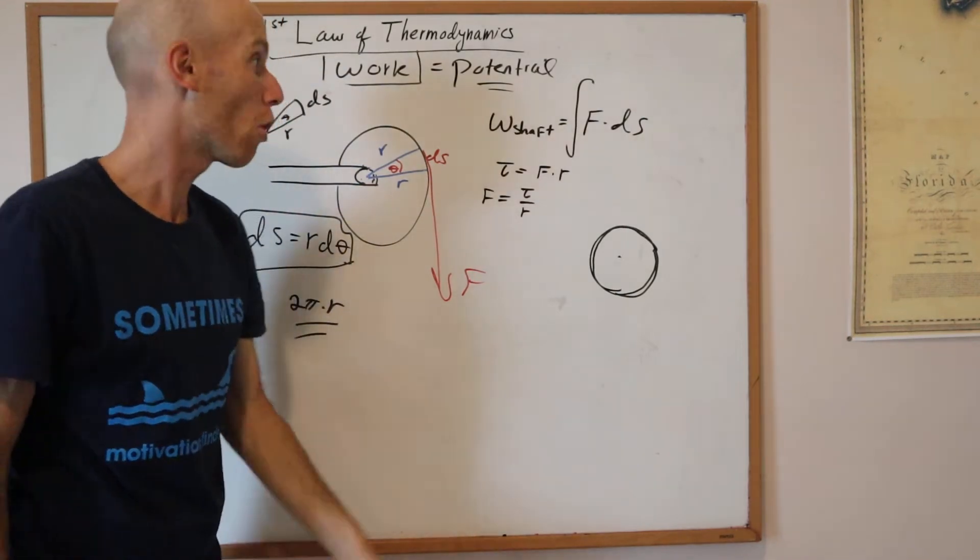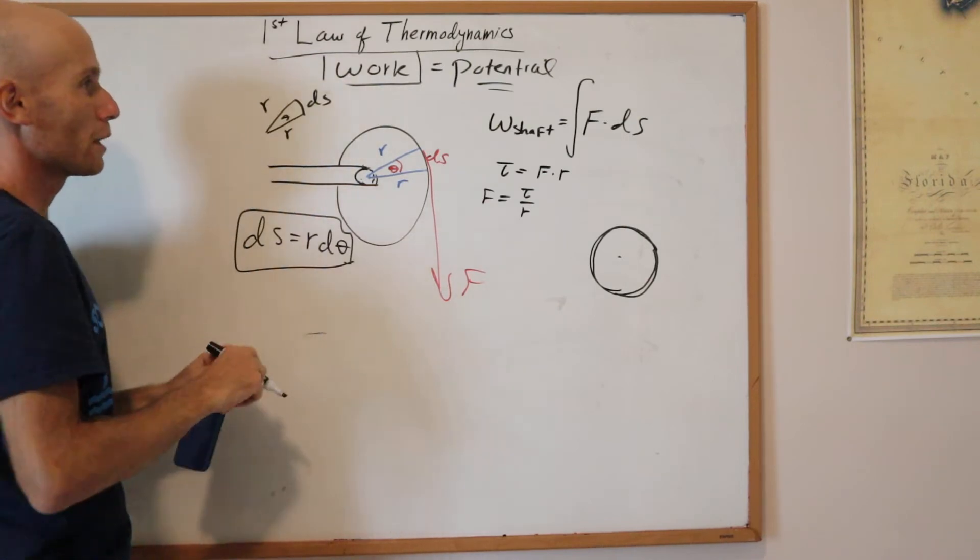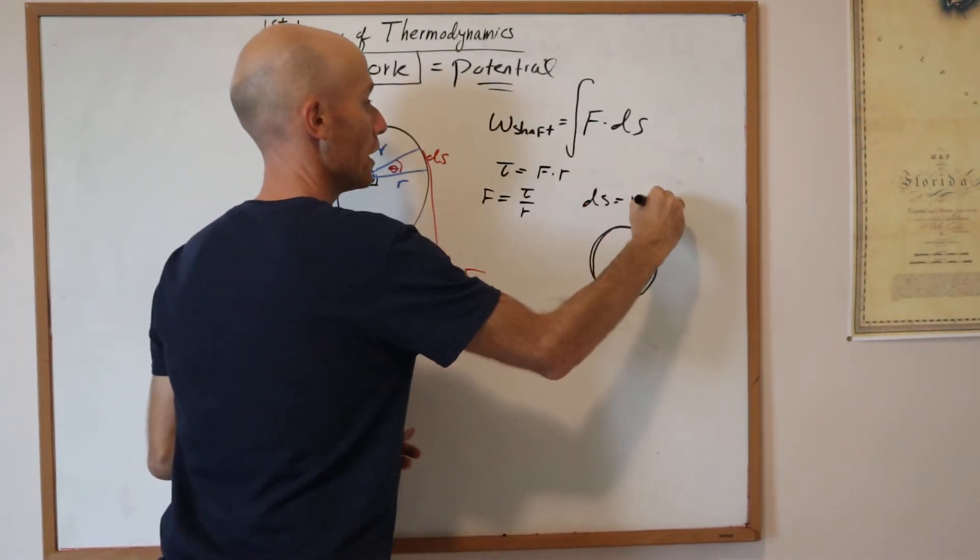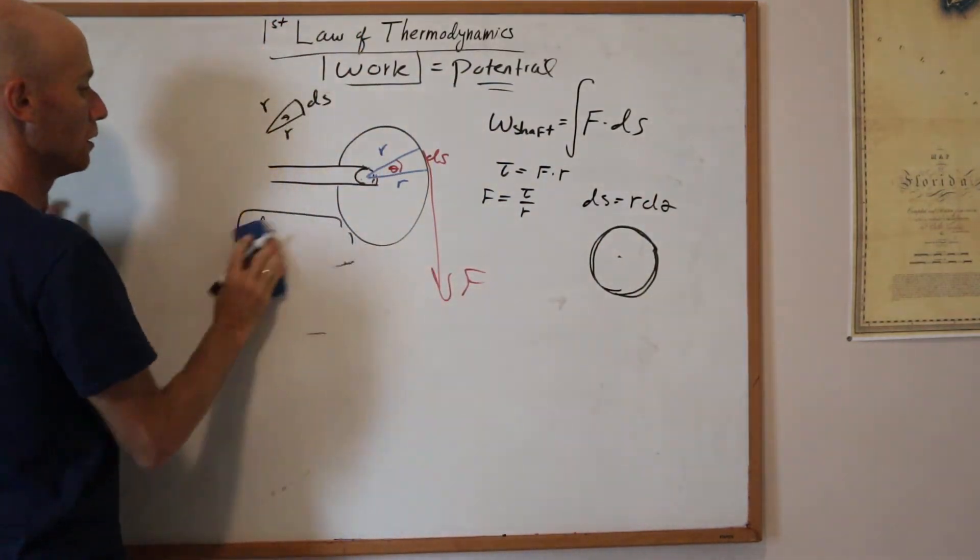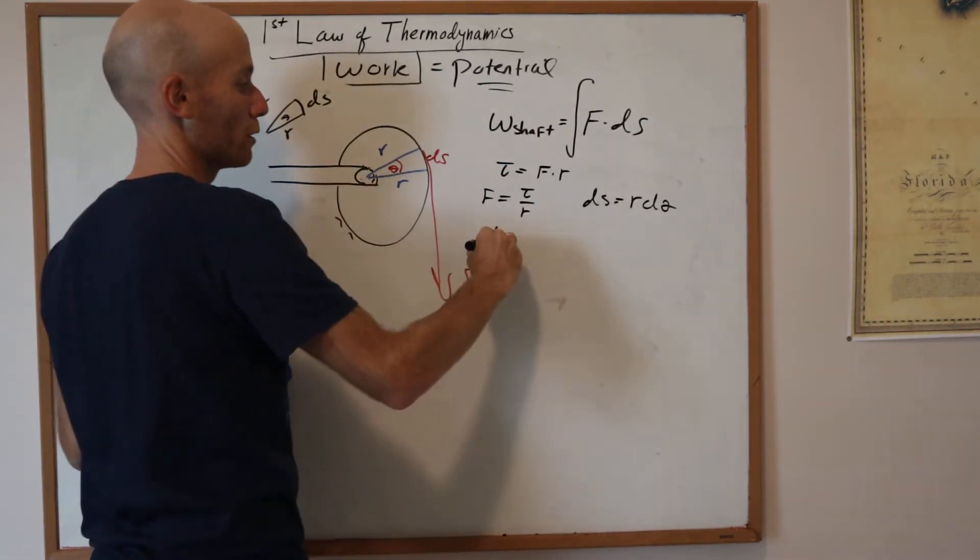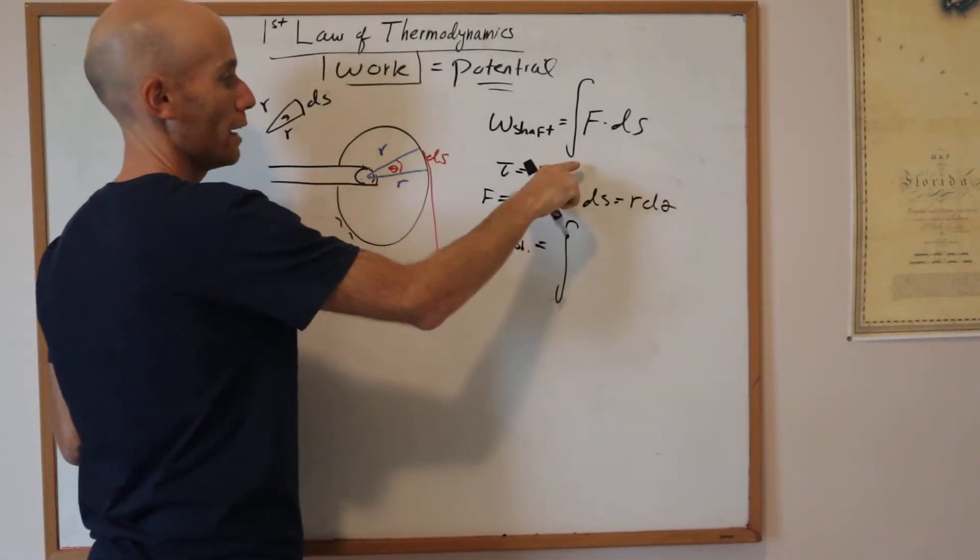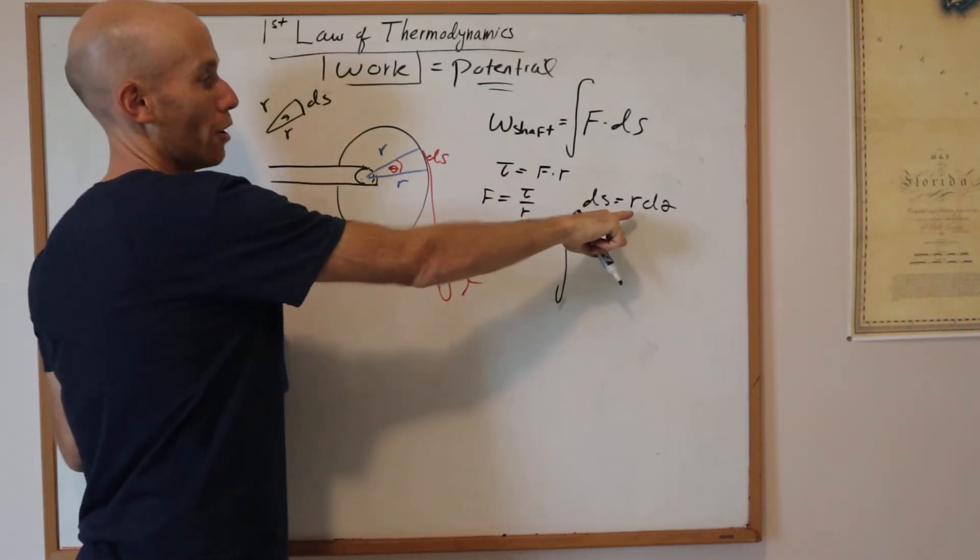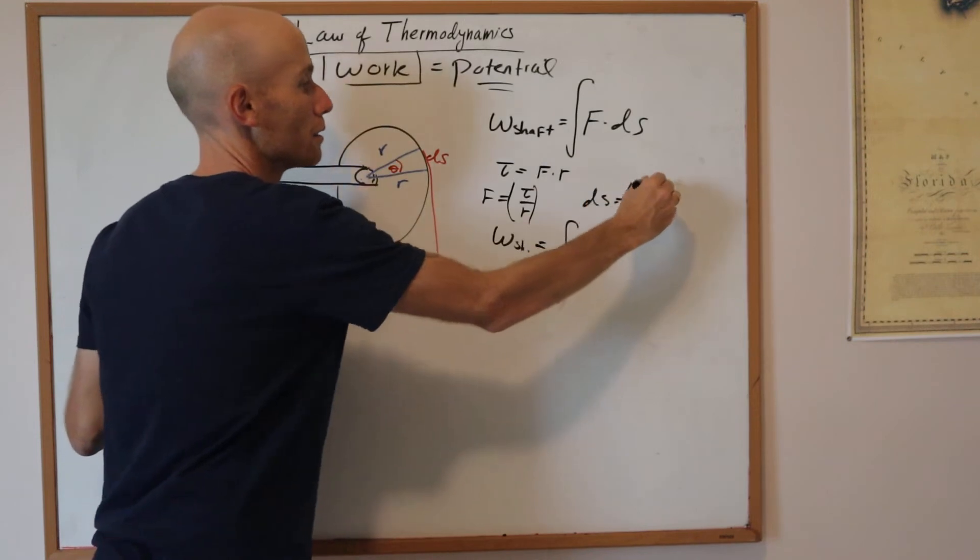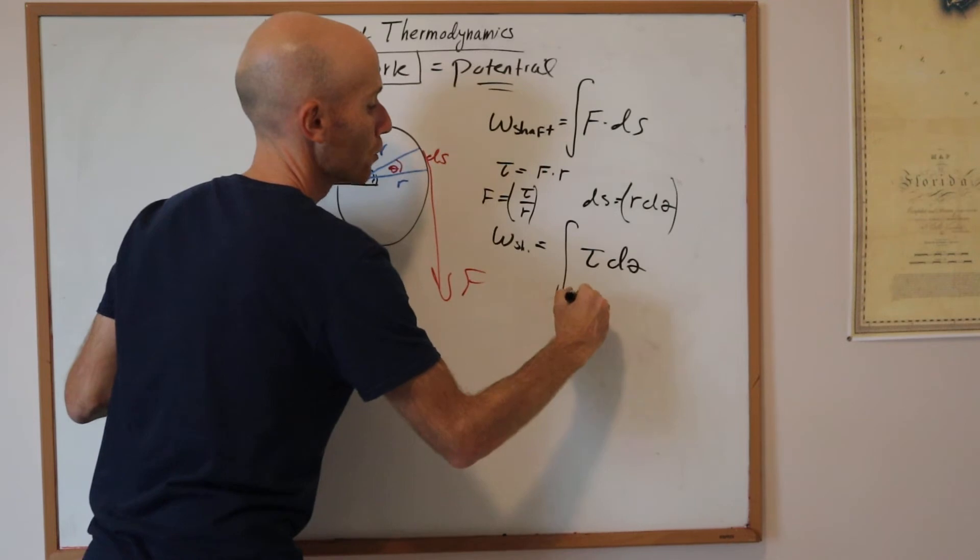This just gives me a fragment of the circumference, the arc length. It's just the arc length. So if I know that ds is equal to r d theta, and I put that into the shaft work integral, then f is tau over r. The r's will cancel because this is being multiplied by this, so I get tau d theta going from theta 1 to theta 2.